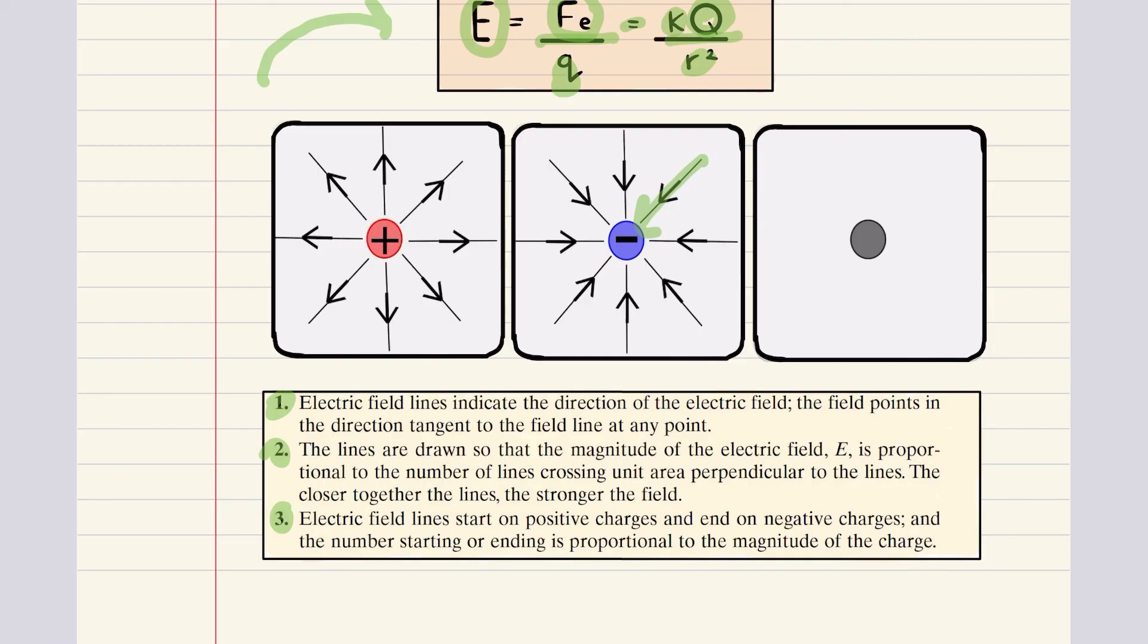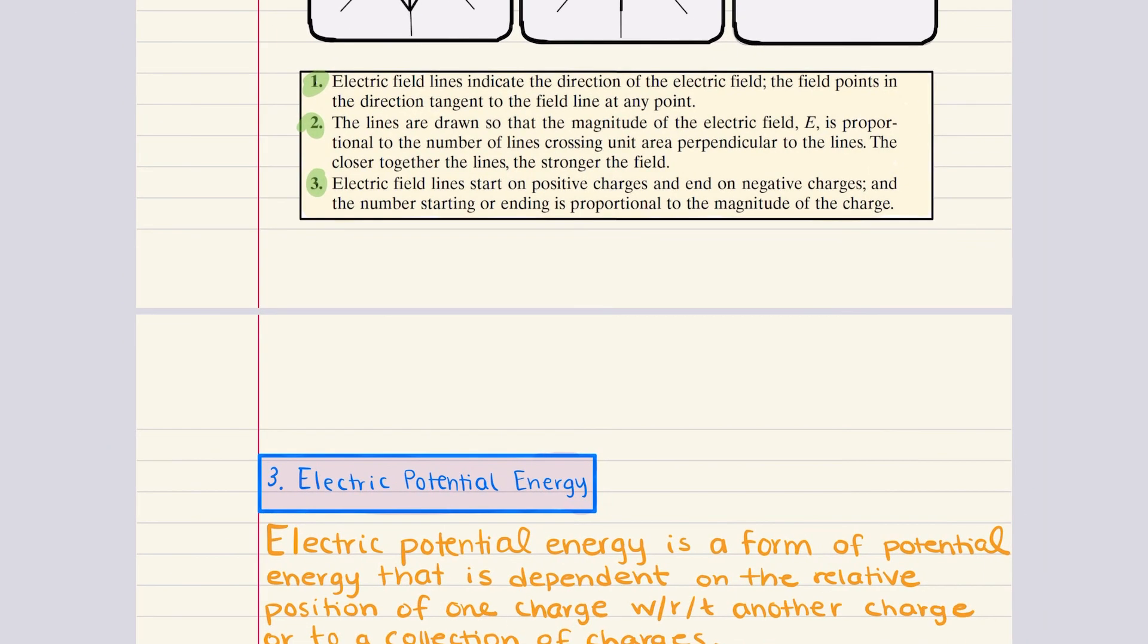For instance, the field lines between a positive and a negative charge will show an attractive interaction with lines curving from one charge to the other. In contrast, the lines between two charges that will show repulsion are going to be curving away from each other. With that, we've completed objective two.